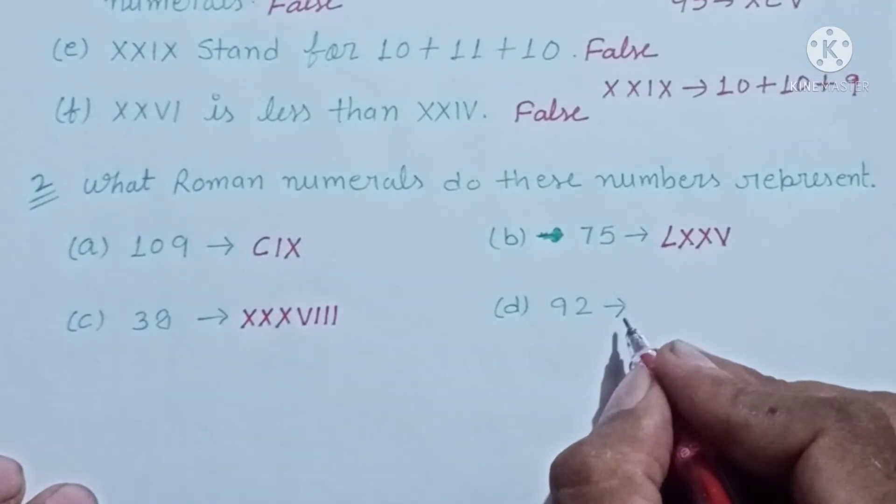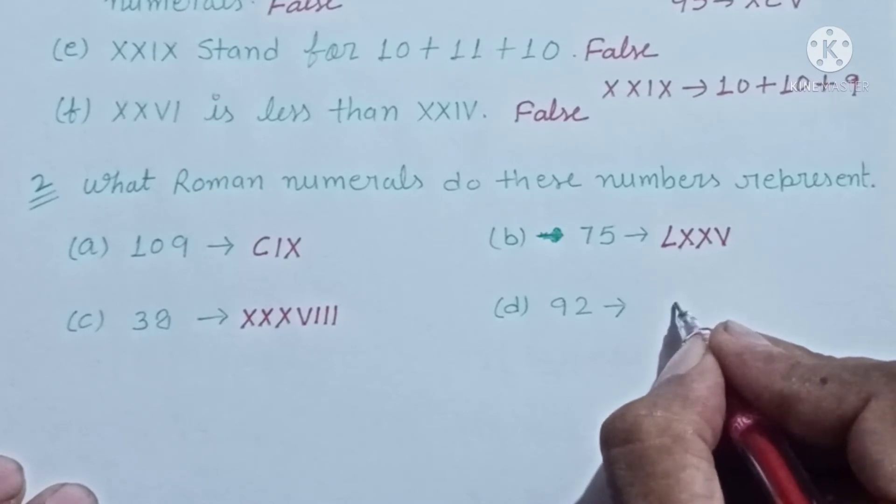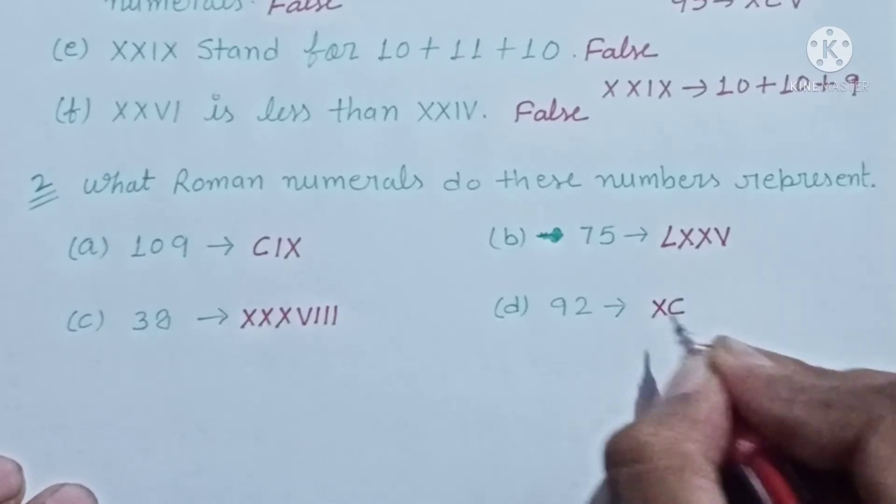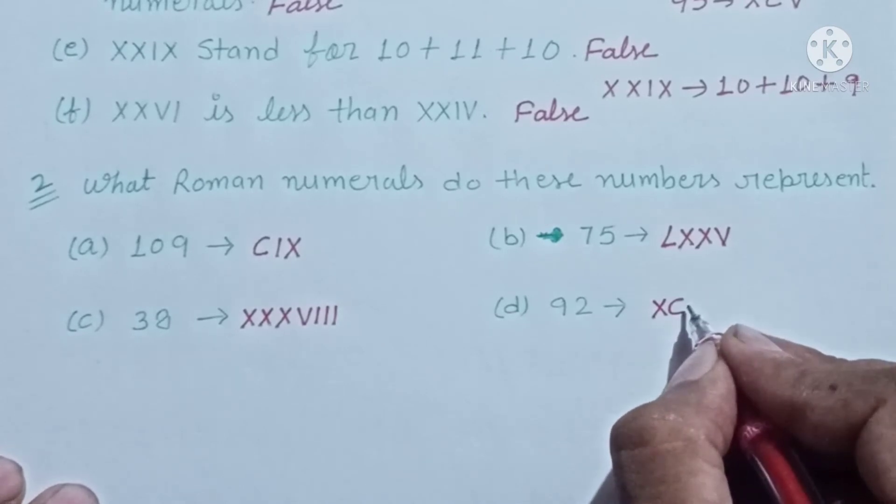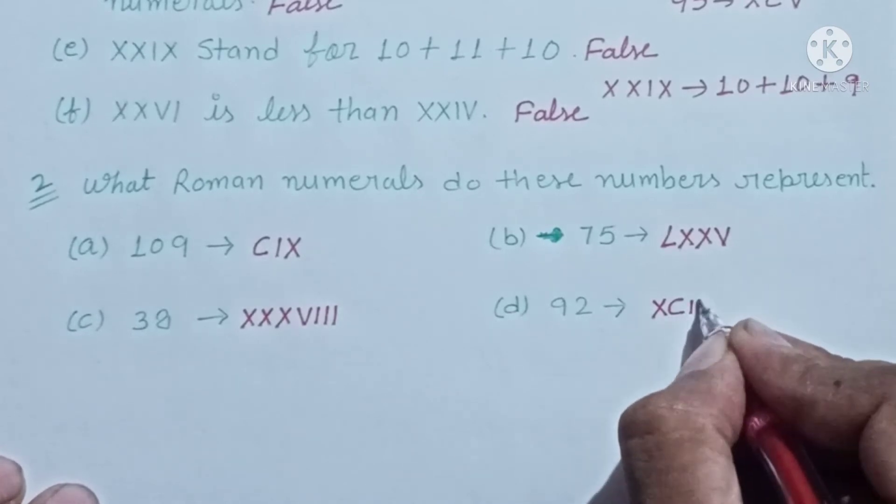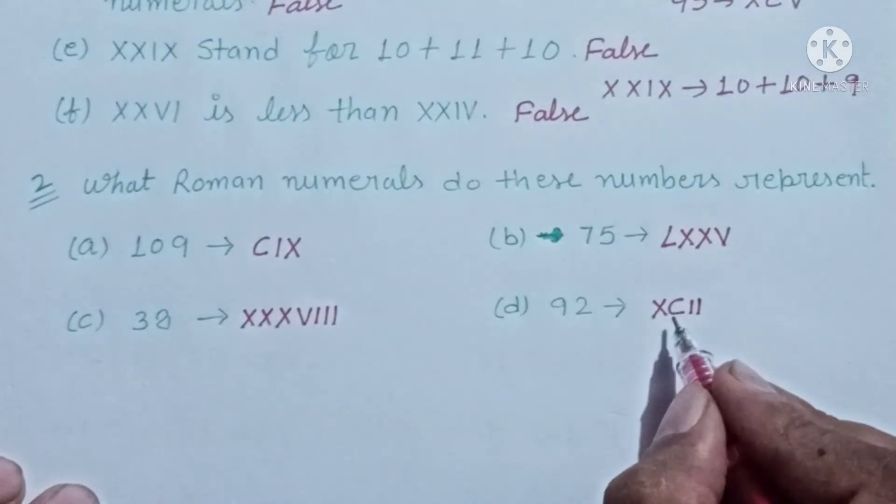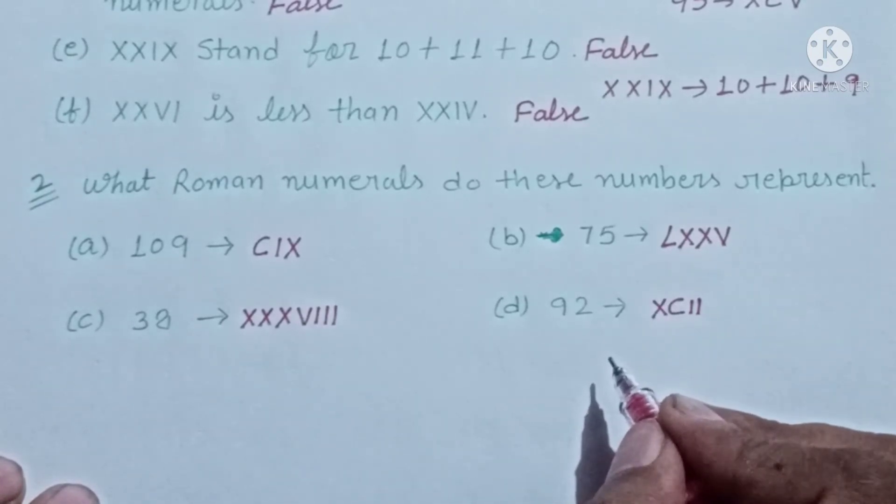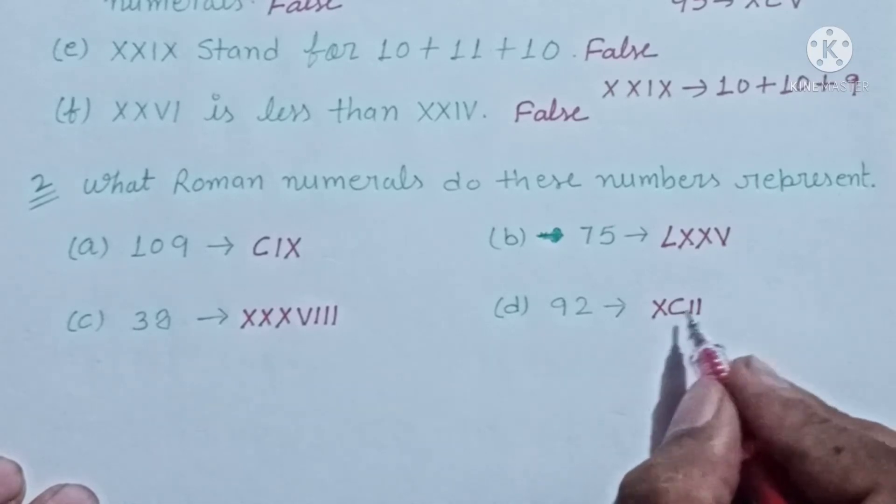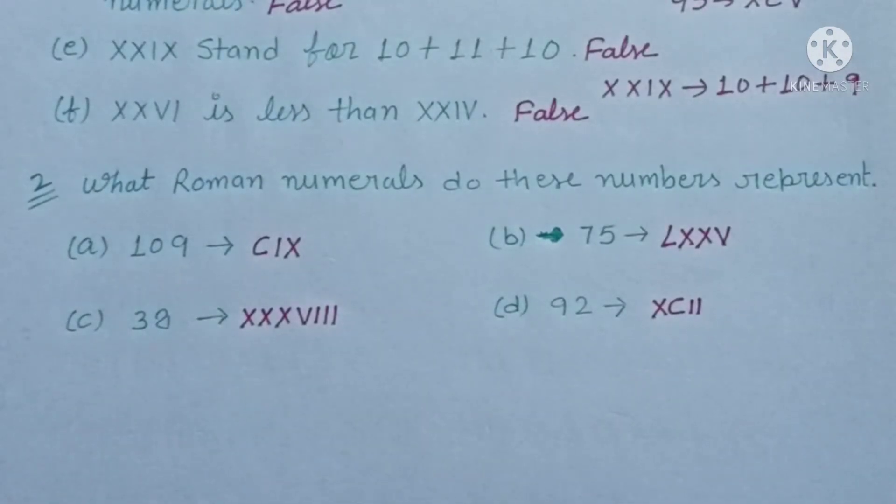92. We represent 92 in Roman numerals. First 90, how do we write 90? XC. Then 2 as II, so 92 is XCII. If we write a smaller symbol on the left-hand side of a bigger symbol, its value decreases. 100 minus 10 is 90, and 2 makes 92.